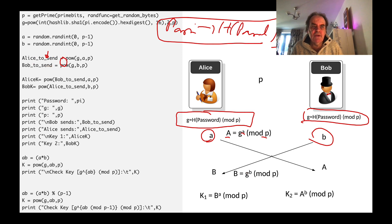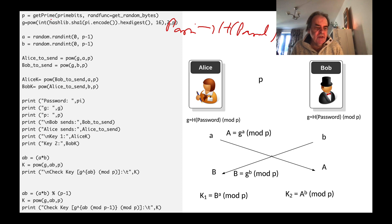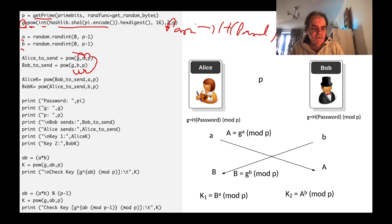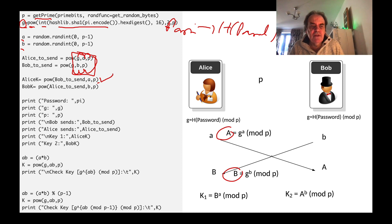Here is some code to implement this. We generate a prime number, take the hash of a password — in this case the password is 'pi' — convert it to an integer, square it to get our generator value g. Then we generate a and b: Alice sends g to the power of a mod p, and Bob sends g to the power of b mod p. When Alice receives Bob's value she raises it to the power of a, and Bob takes Alice's value and raises it to the power of b, giving us the same shared key.